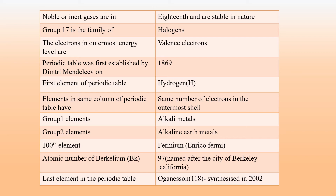The common name of group 17 elements is Halogens. The electrons in the outermost energy level are called valence electrons. The Periodic Table was first established by Dmitri Mendeleev in 1869. The first element of the Periodic Table is Hydrogen.